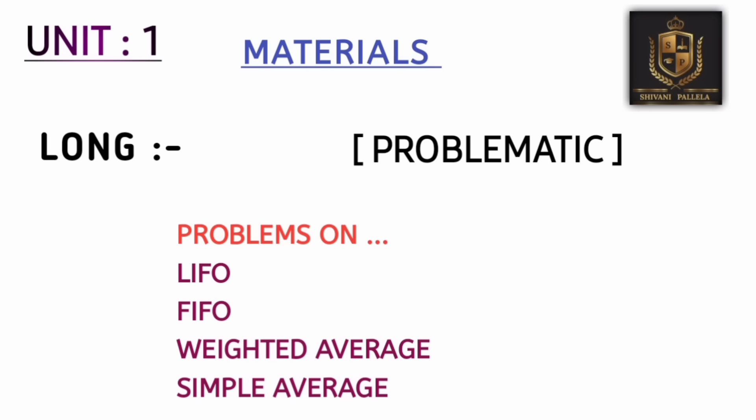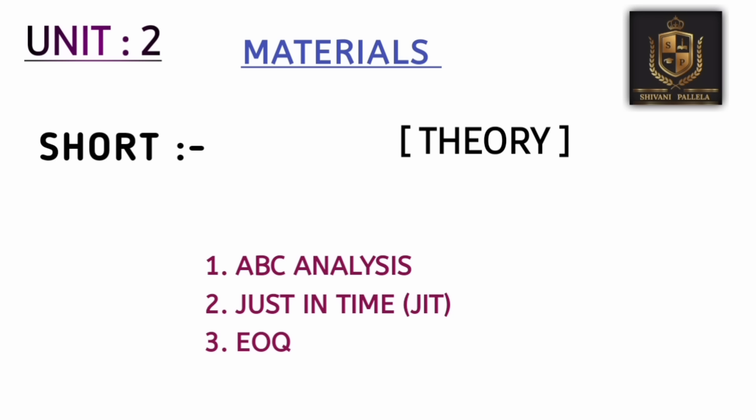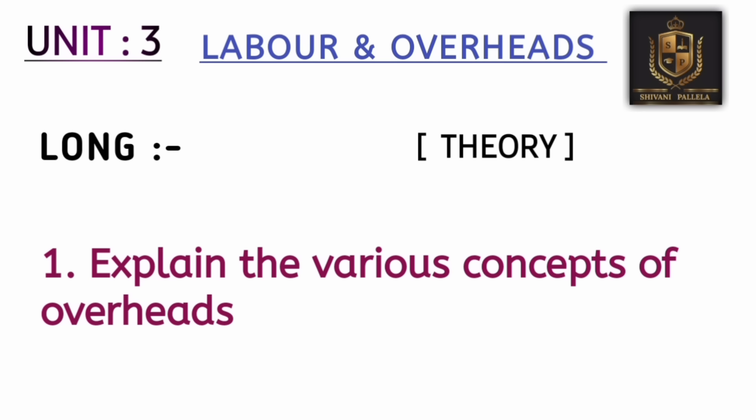In unit two, the four problematic methods are LIFO, FIFO, Weighted Average, and Simple Average. If you are perfect with LIFO, FIFO, and Weighted Average, you will definitely attempt one long question of 12 marks and one short question of 4 marks — that's 16 marks. Combined with 16 marks from unit one, you are attempting 32 marks total. For short theory questions in unit two, the most important topics are ABC Analysis, Just-In-Time (JIT), and Economic Order Quantity (EOQ) — these are the key four-mark theory questions.